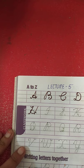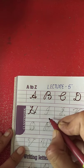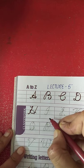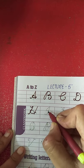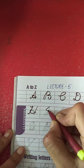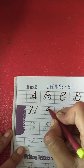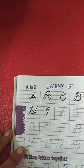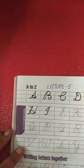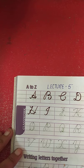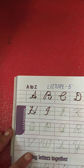H for house ke baad kaunsa letter aata hai? I — I for igloo. Now put your pencil here and draw a curve from the blue line to the red line and again a slanting line from the red line to the second blue line. This is letter I — I for igloo. What is the spelling of igloo? I-G-L-O-O. Igloo.